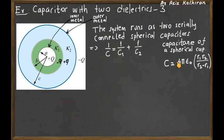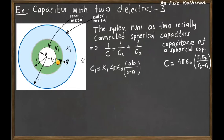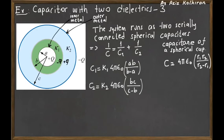If you have a dielectric material, you multiply this expression by the dielectric constant. So the inner spherical capacitor C1 equals k1 times 4π ε₀ times a times b, divided by b minus a. The outer spherical capacitor C2 equals k2 times 4π ε₀ times b times c, divided by c minus b.